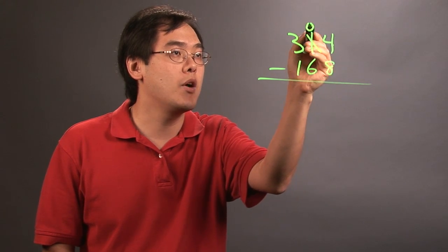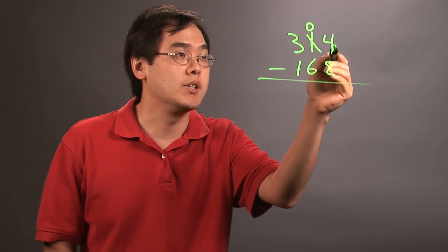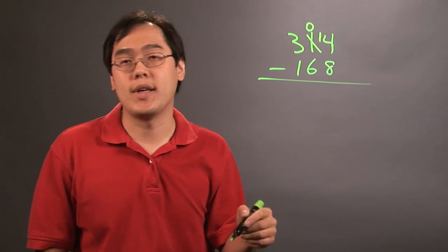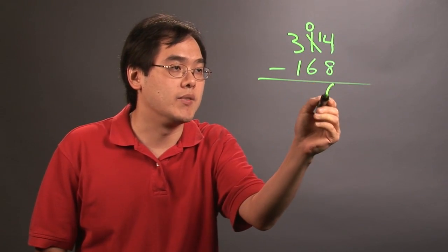The 1 is going to end up being a 0. And then when you're borrowing, you're adding 10 units. So instead of 4, it becomes 14. So that's what you're actually subtracting. So 14 minus 8, that's going to give you 6.